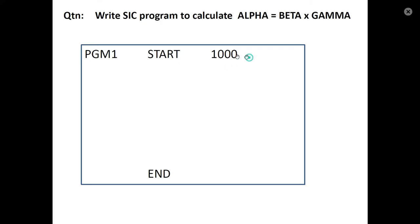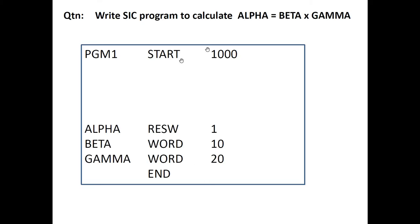This is the first line. The last line is END with address 1000. We have three variables: alpha, beta, and gamma.